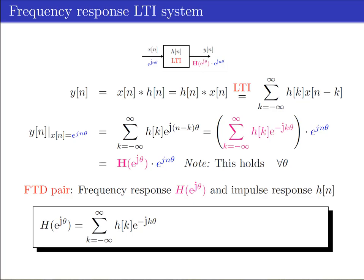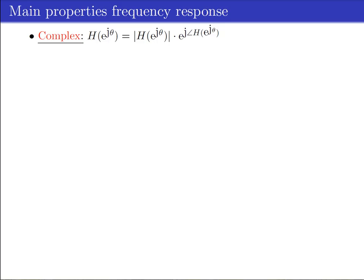Concluding, we have the following FTD pair in which capital H(e to the power j theta) is called the frequency response of the LTI system with impulse response hn. The frequency response is, compared to the impulse response, an alternative way to describe the behavior of an LTI system. It summarizes over all frequencies the response by giving the magnitude and phase change experienced by all possible frequencies. Because of the FTD relation, we can evaluate the impulse response via the inverse FTD.